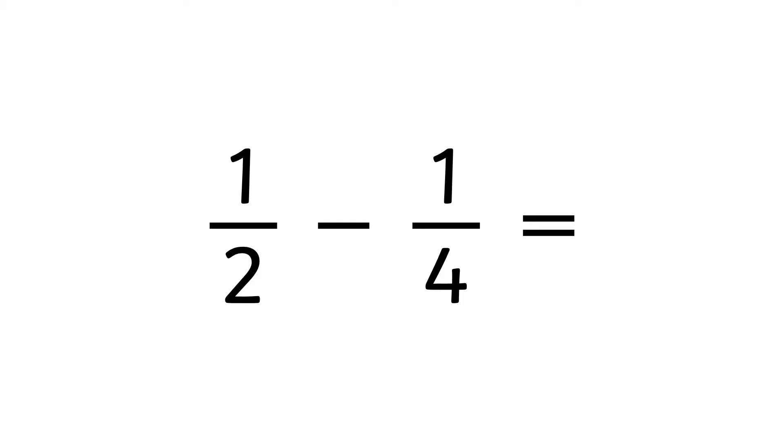For example, one half subtract one quarter. To answer this easily we must make the denominators match and in this case we're going to make both the fractions have a denominator of 4 because 4 is a multiple of both 2 and 4.